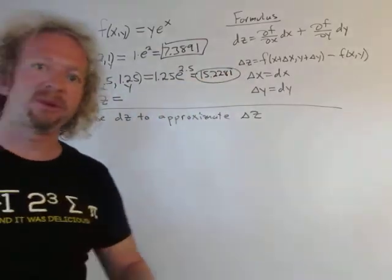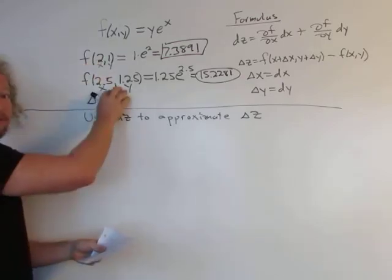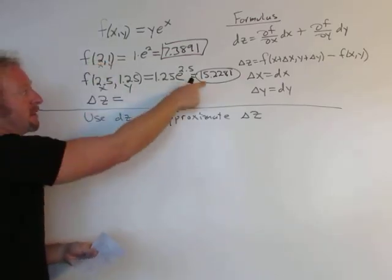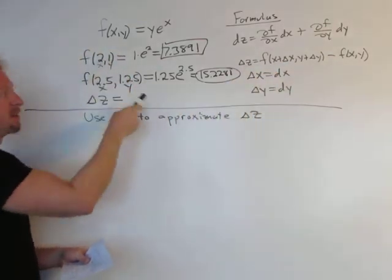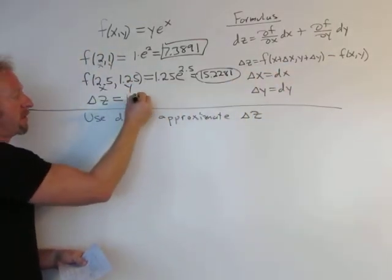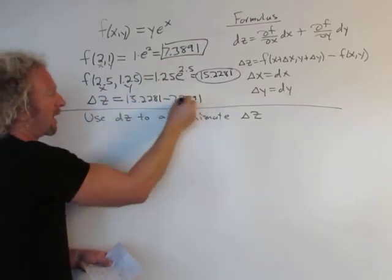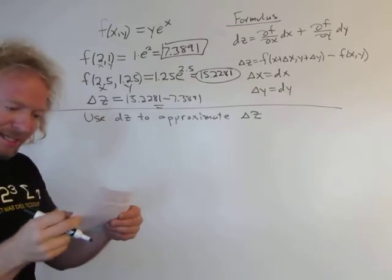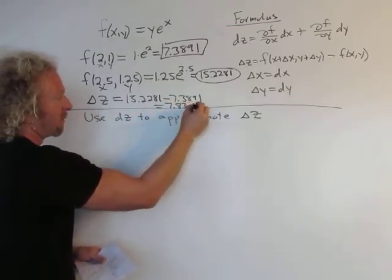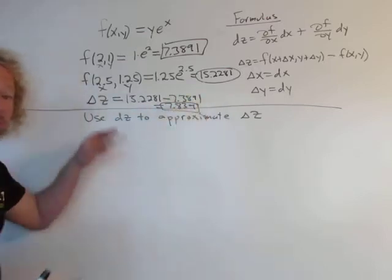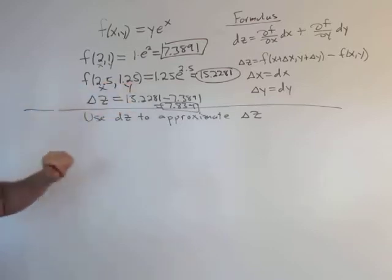This was a homework problem, so they wanted four decimals. For Δz, you have to subtract these. It's f of this minus f of this—here's the formula. So it would be 15.2281 minus 7.3891, and I got 7.839. That's the actual change in z as you move from (2,1) to (2.5, 1.25).